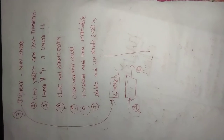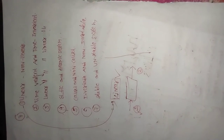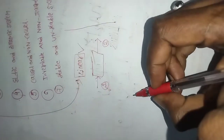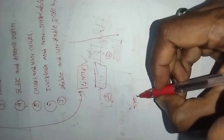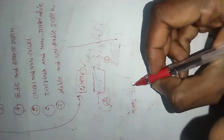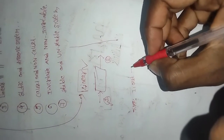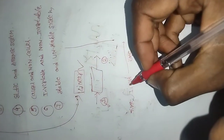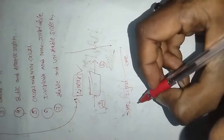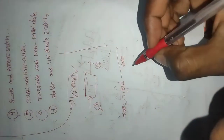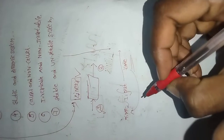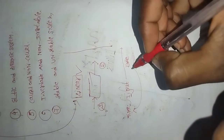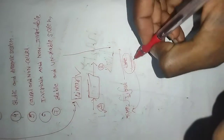For a time variant system, the input and output characteristics are varying with time. For a time invariant system, the input and output characteristics do not vary with time - the output characteristics remain constant regardless of when the input is applied.